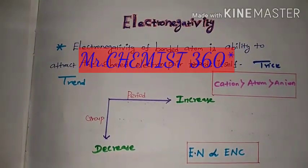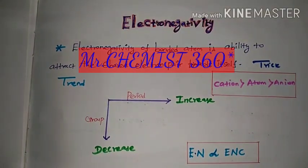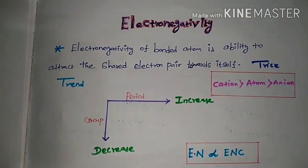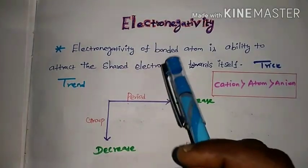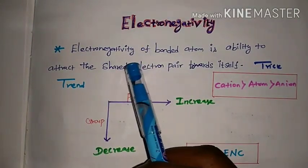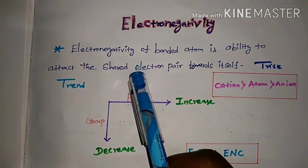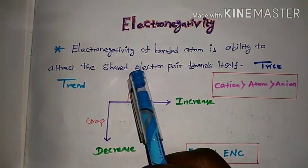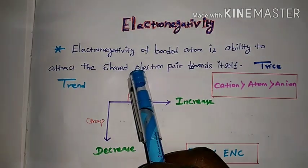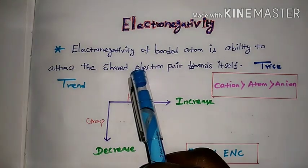Welcome to our YouTube channel. We are going to look at very important topics: electronegativity, atomic size, ionization potential, and electron affinity.